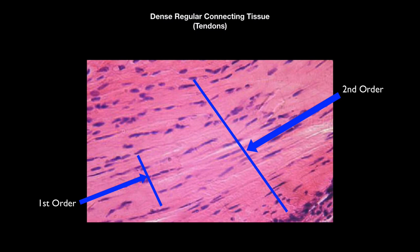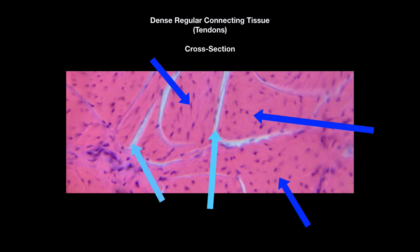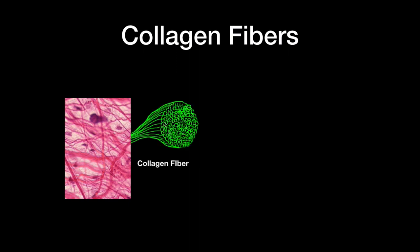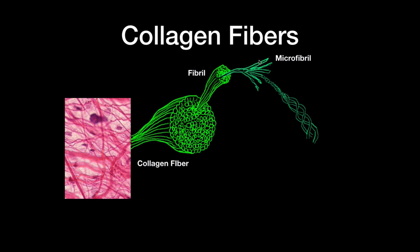If you cut the tendon in a transverse section, you'll see bundles of collagen with their tendoblasts clearly, and loose connective tissue between each bundle. Looking inside a collagen fiber, it consists of many small fibrils. Each fibril is made of microfibrils, and microfibrils are made of tropocollagen helices. This structure makes collagen fibers extremely strong, which is important for keeping the body's different structures in place.